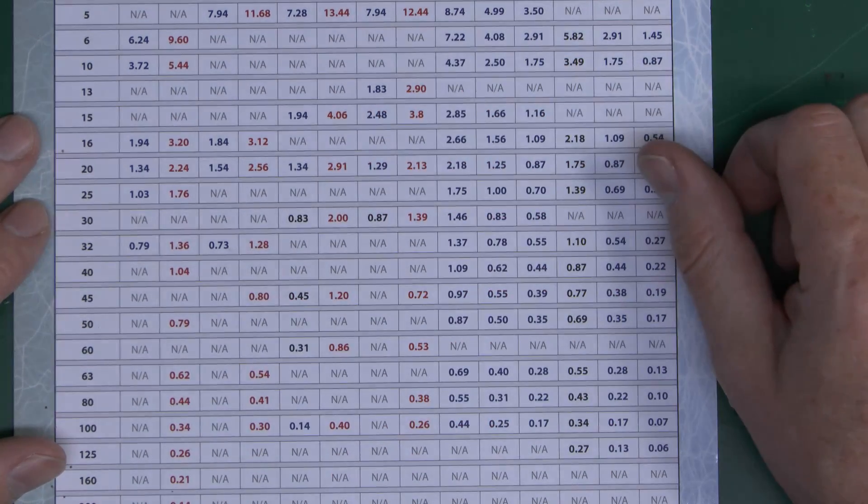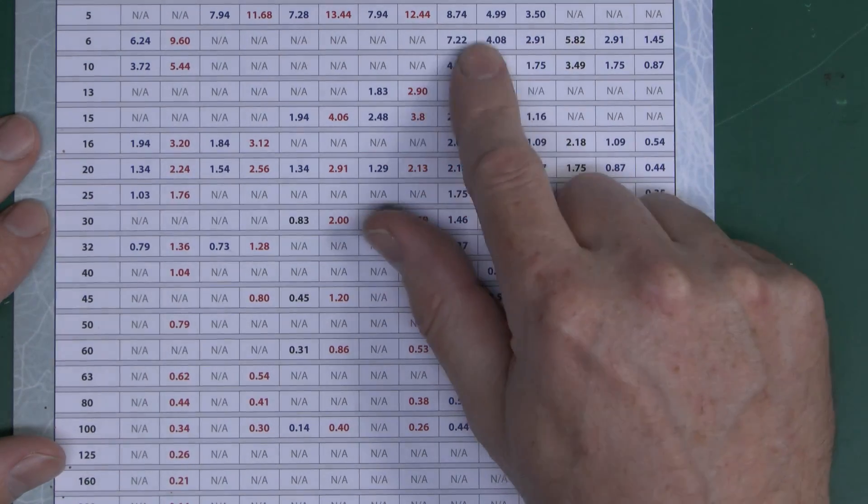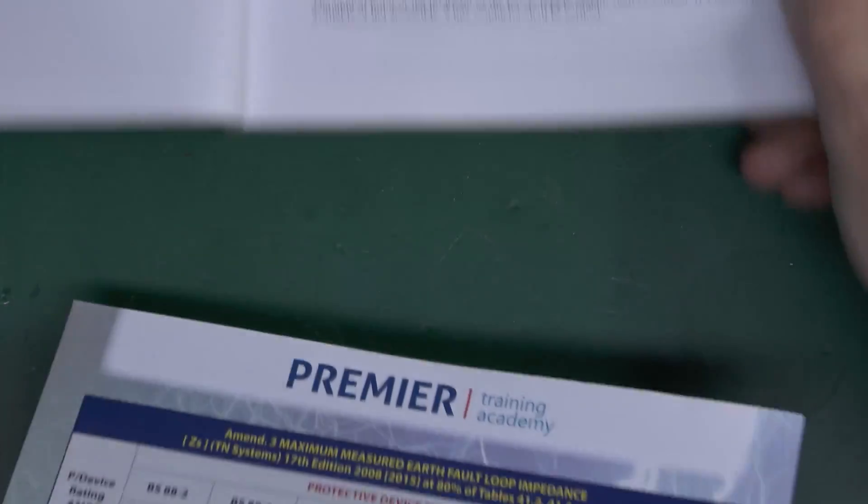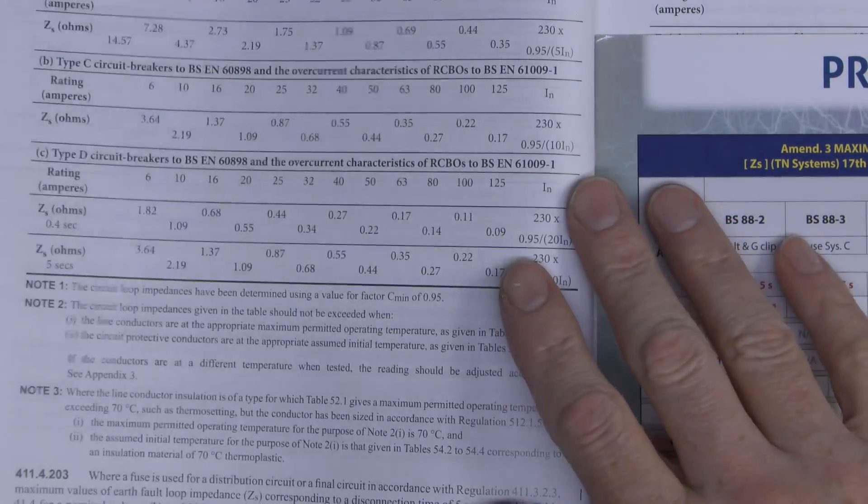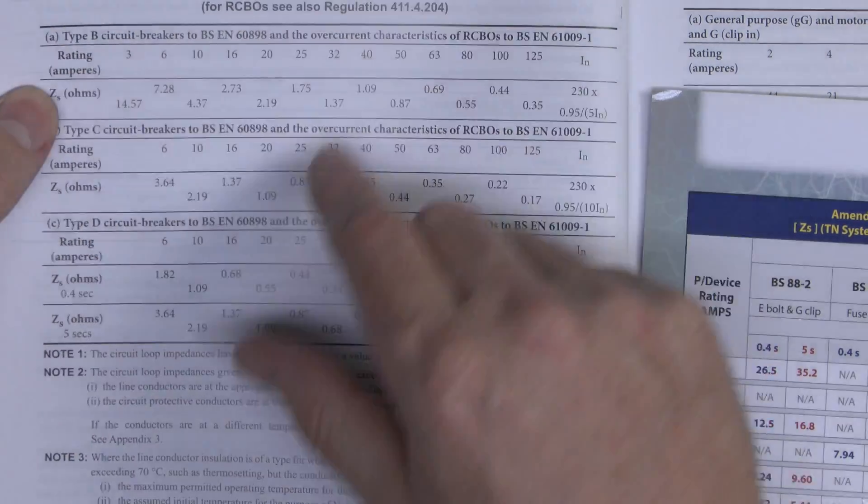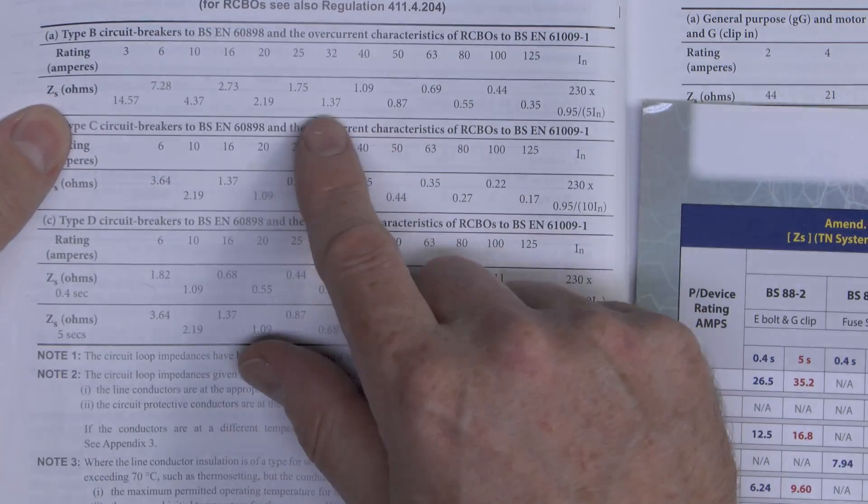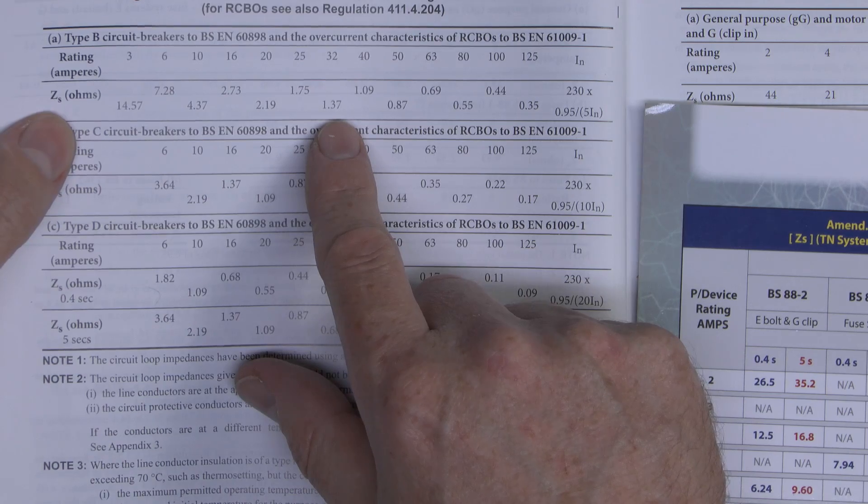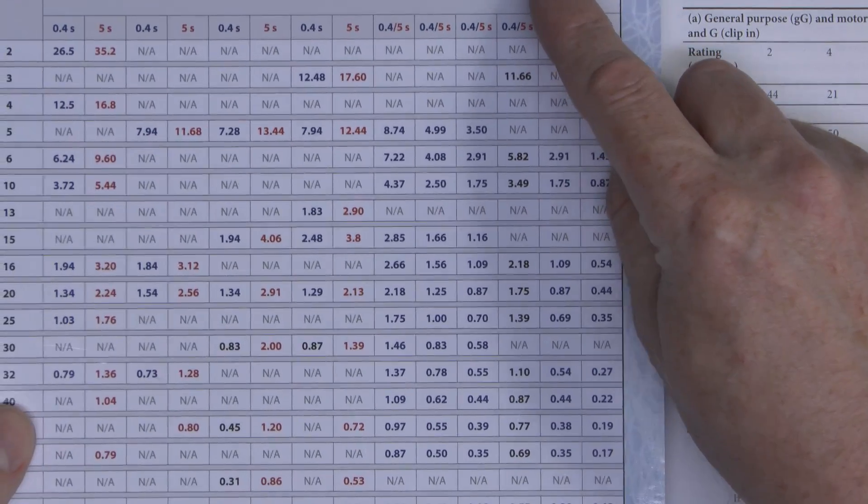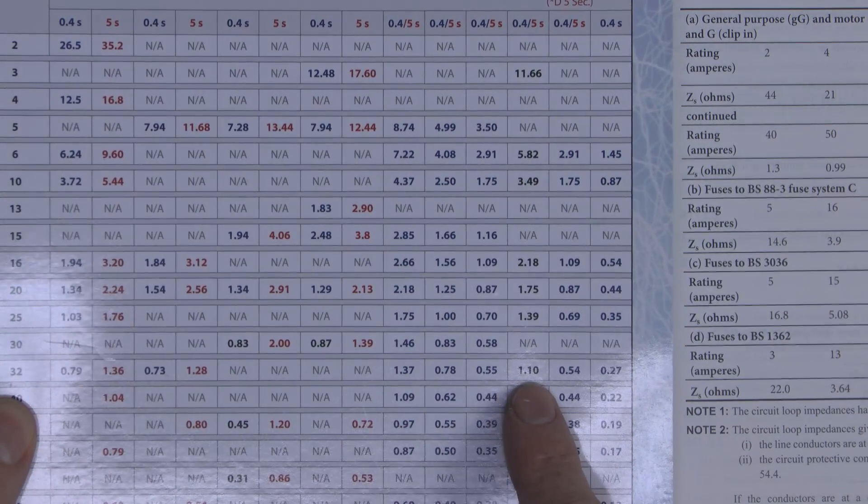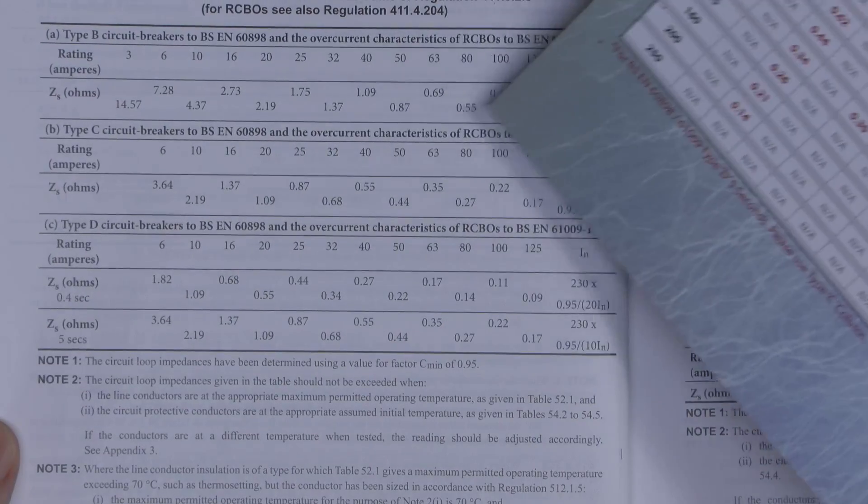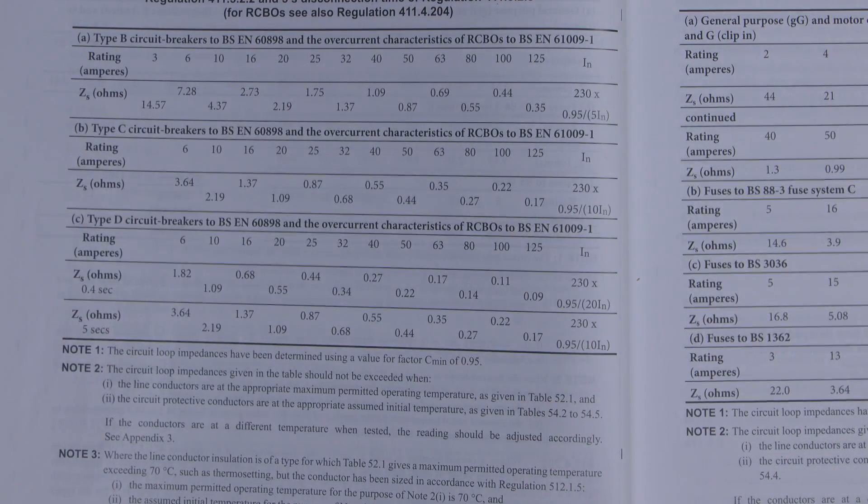So the question is then how are these values actually determined? And then the other question is why are the values in here different to the values in the book we saw previously? If we just have a look at one example, let's take a 32 amp circuit breaker, and it's going to be a type B. So type B and it's a 32 amp circuit breaker, and we can see the value here is 1.37 ohms. But if we look on this chart, and we have a look at type B circuit breakers and 32 amps, the value we're given is 1.10. So obviously there's some difference between 1.10 and 1.37, so we'll see how that works as well.